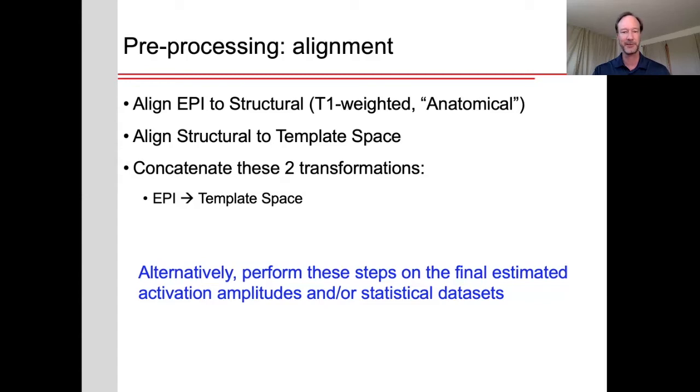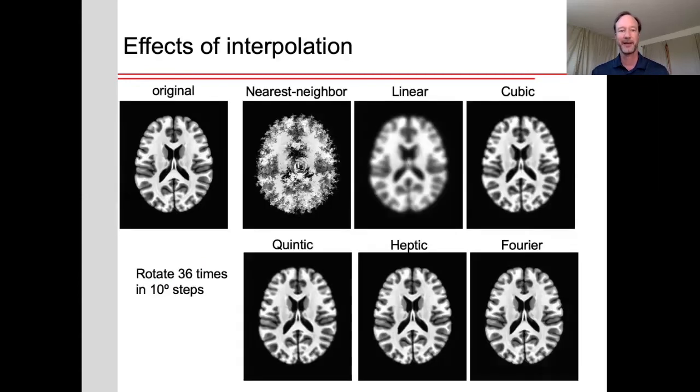Now, why do we want to concatenate these two transformations? The reason for that has to do with the fact that every time you do an interpolation, you introduce some blurring in the data. So in this example, I've taken an original brain image that you see here on the left and I've rotated this 36 times each time resampling this data using different interpolation algorithms, either nearest neighbor, linear, cubic, and so on. And you can see that after 36 interpolations, nearest neighbor is particularly bad. Linear also introduces quite a bit of blurring and the others a bit less so. But in general, the more times you interpolate it, the more blurring you add to the data. So if you want to reduce the amount of blurring in your data, it's best to concatenate all of these transformations and apply a single transformation at the end.